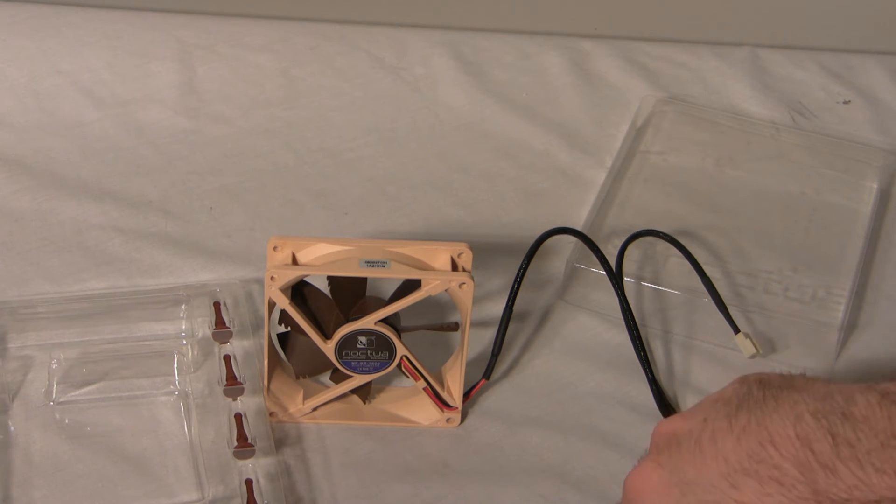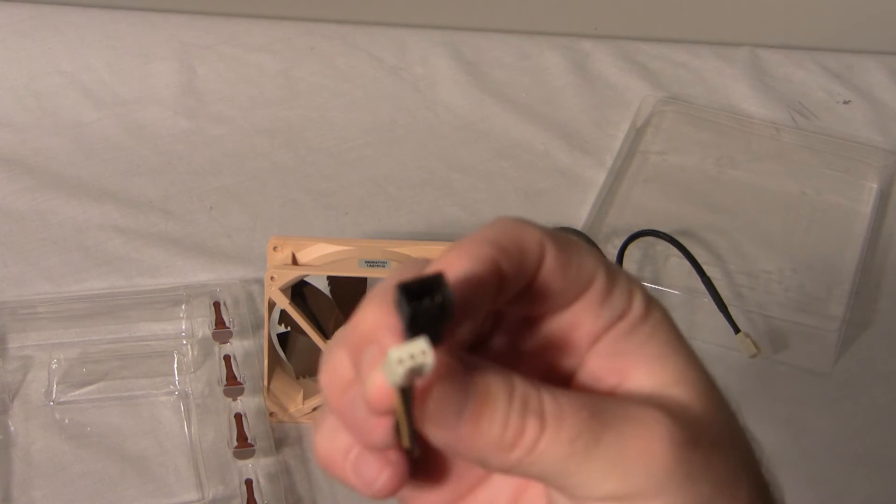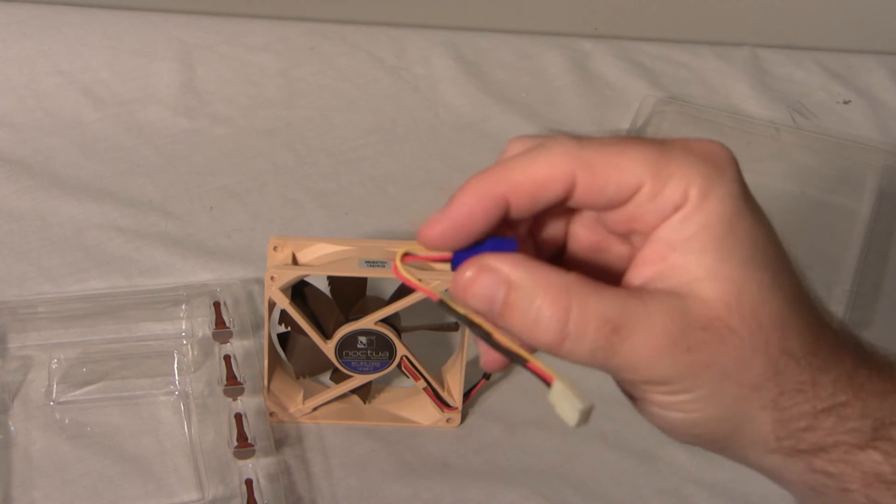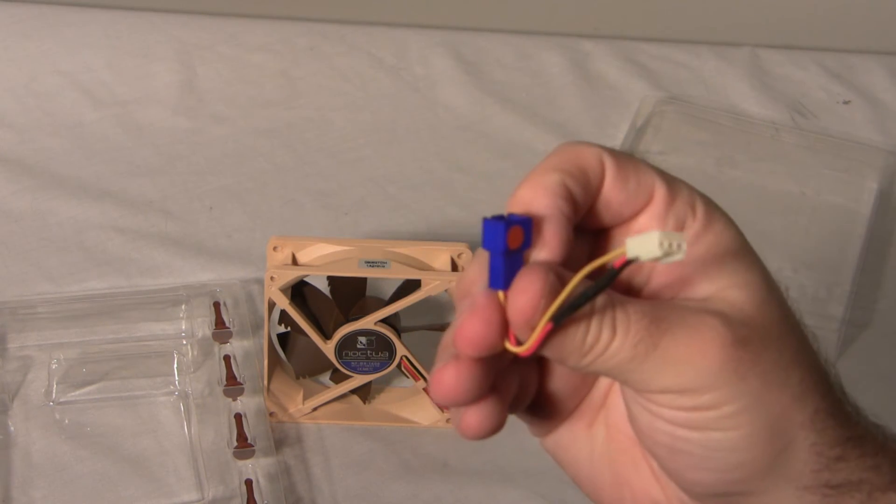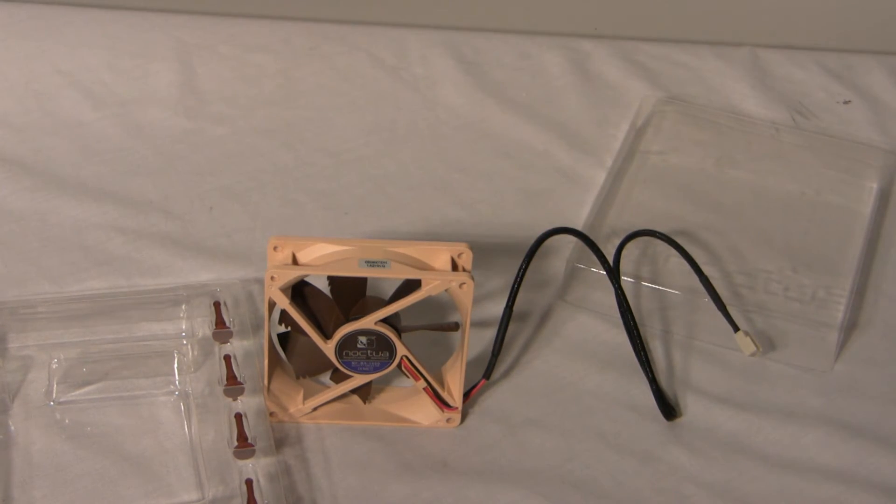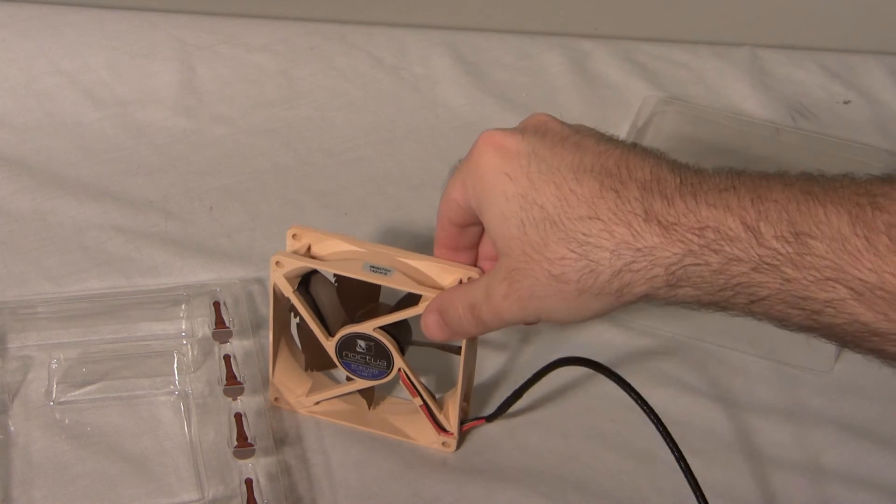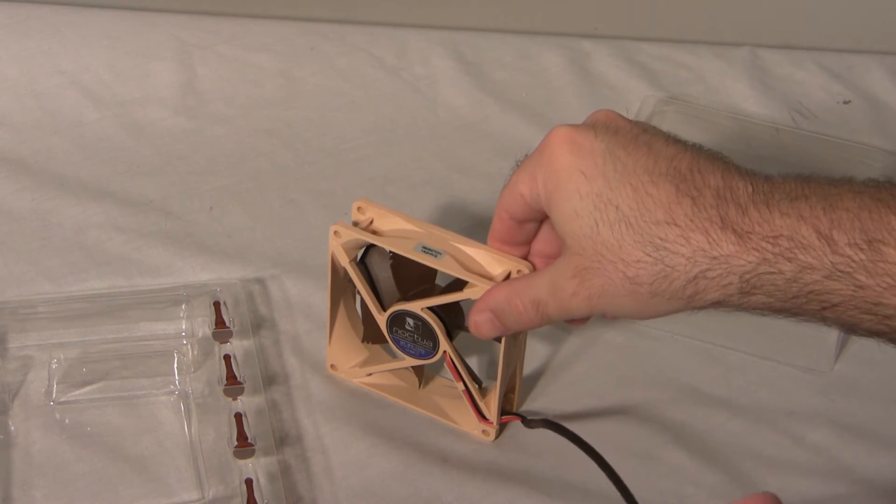The one with the black end for the adapter is the low noise adapter and the one with the blue is the ultra low noise adapter. And it has a long power cable that is sleeved.